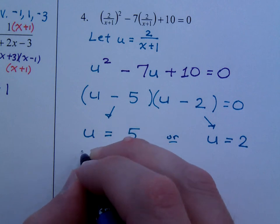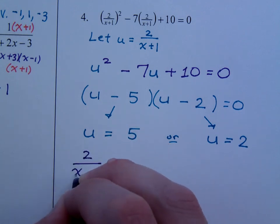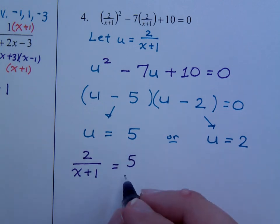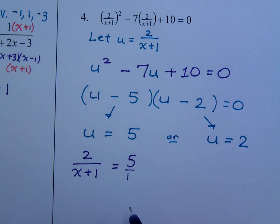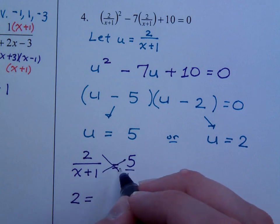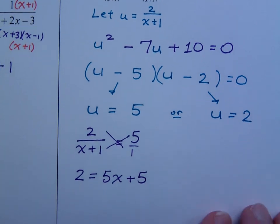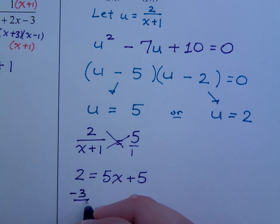2 over x plus 1 is equal to 5. We need to solve this equation because the goal here was to get x by itself. That was the original variable. If I make this over 1, I create a proportion and I know that cross products are equal. That means that 2 times 1 or 2 equals the other cross product, 5 times x plus 1, so that's 5x plus 5. Solving for x means I subtract the 5 to get negative 3 and then I would divide by 5. That's what x is equal to, negative 3 fifths.